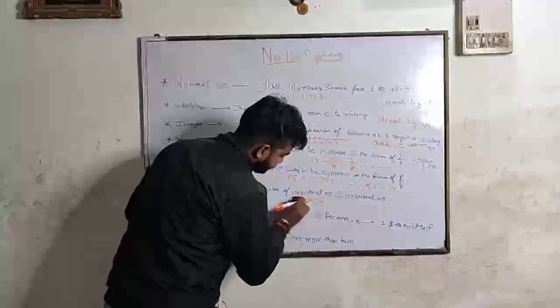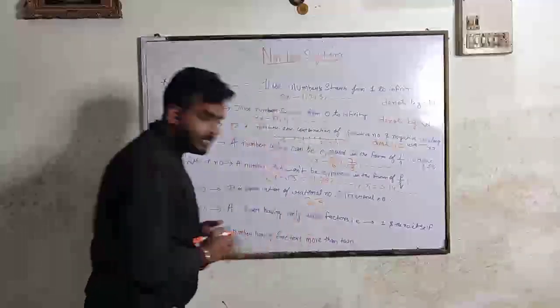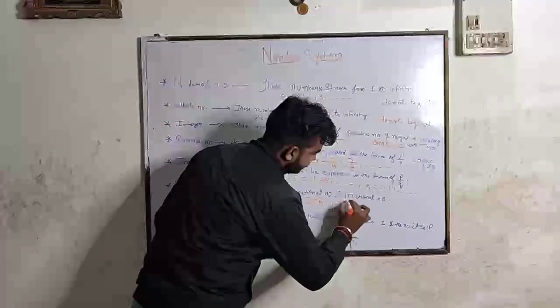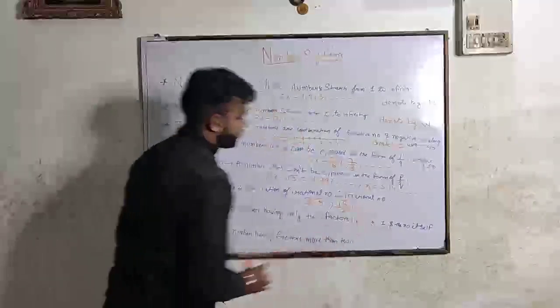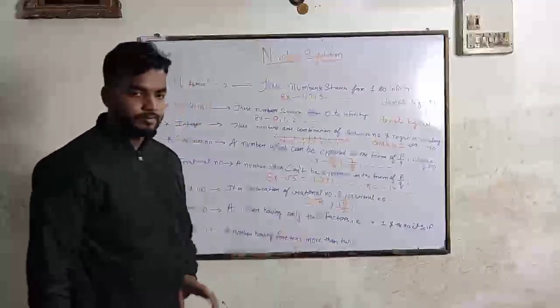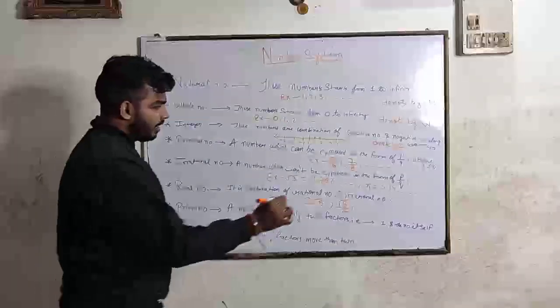Real number is a combination of rational and irrational number. Real number is a combination of rational and irrational number. Clear.